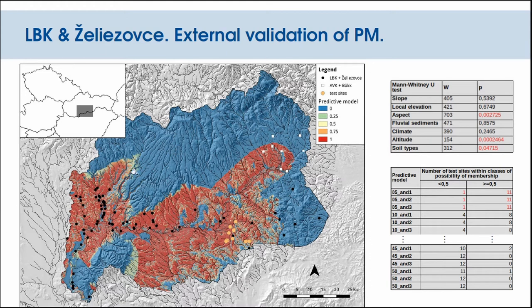Here is a visualization of the predictive model, which was also tested externally. We took a new set of test sites discovered very recently by field walking within the ESAP project. In this table, we can see that the spatial attributes of these new test sites resemble the original dataset quite closely. We assume these sites will fit well within the existing predictive model, and indeed, most of the new sites fall within the model based on the 5th percentile, confirming it is validated through an external set of sites.